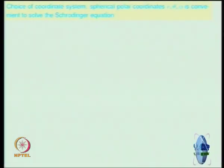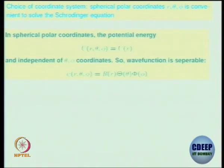It is better to work on the r theta phi coordinates. No point in working on x, y - you can work with x, y, z, but then it becomes more complicated. So choice of coordinates, spherical polar coordinates, is convenient because U of r theta phi is actually U of r only. There is no theta phi component. And we can write the separable basis function as a product of the radial dependent, the theta dependent, and the phi dependent.